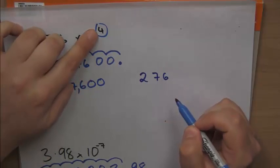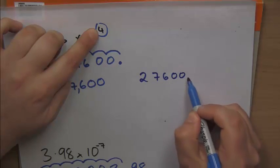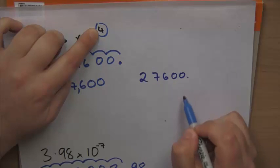So we've got 2, 7, 6, and I need it after 4. So 1, 2, 3, 4, that's where the decimal point would be. So that's how we get the number.